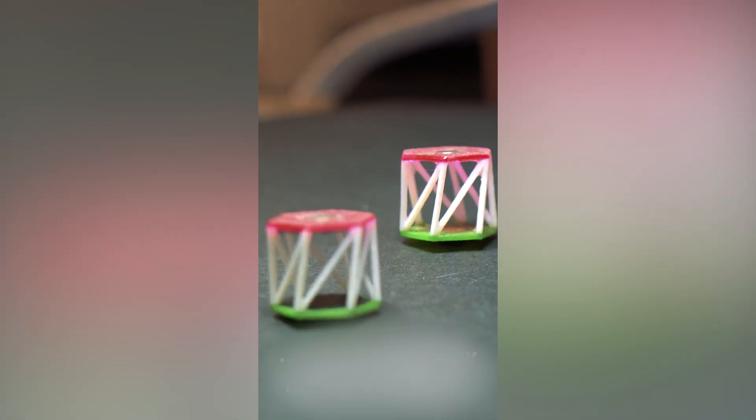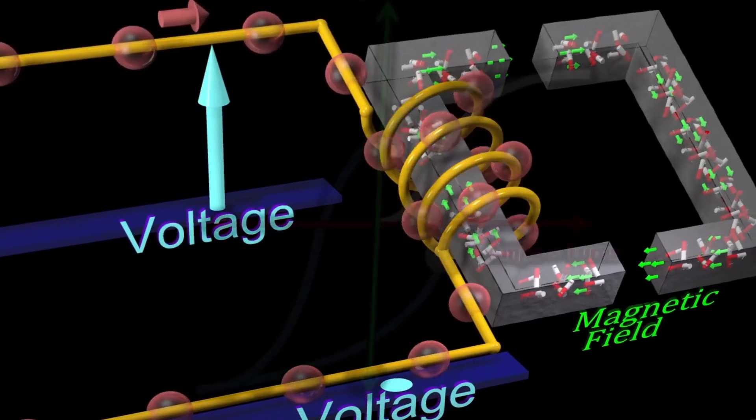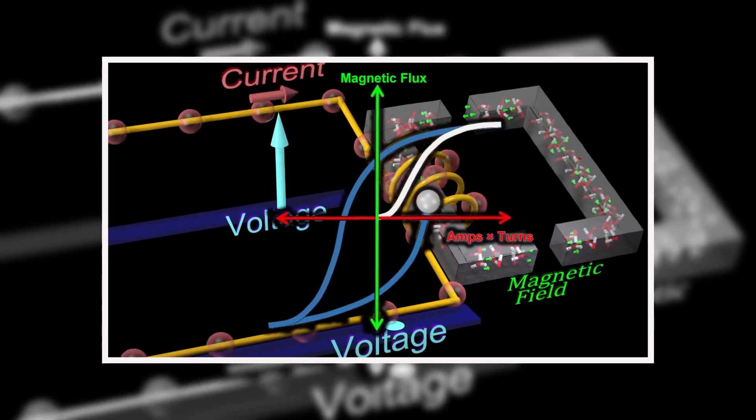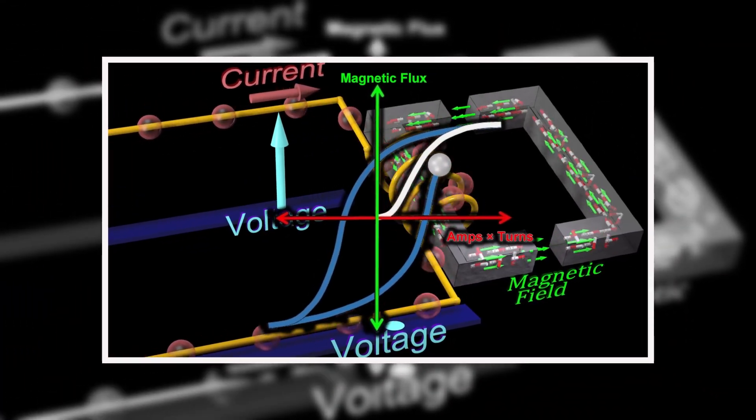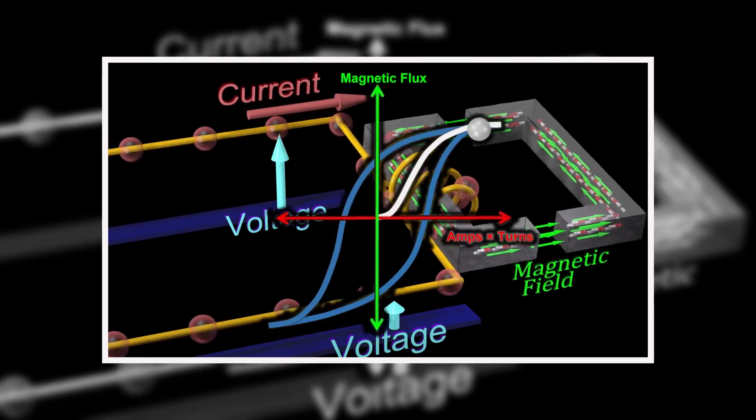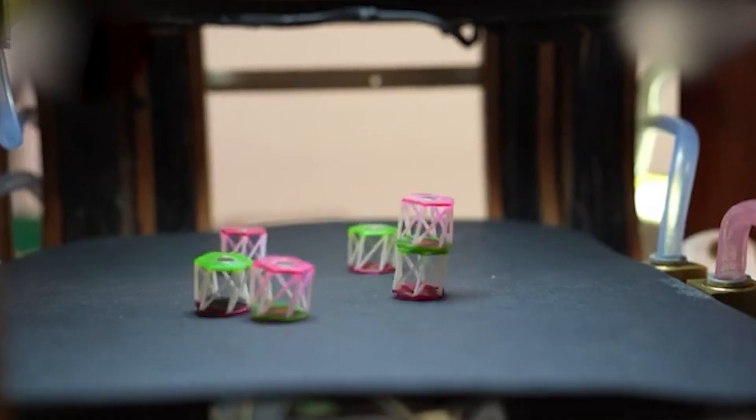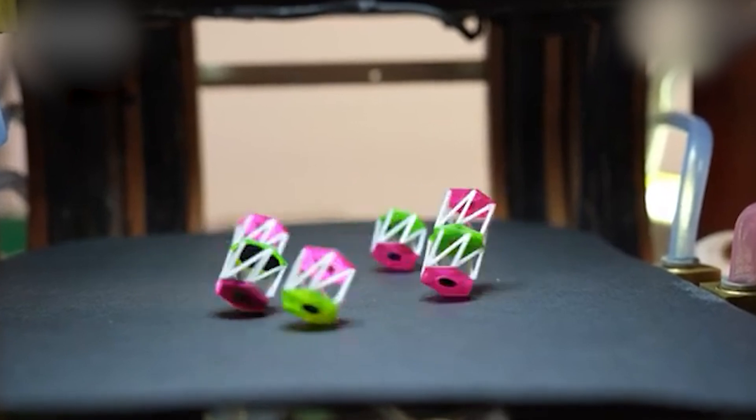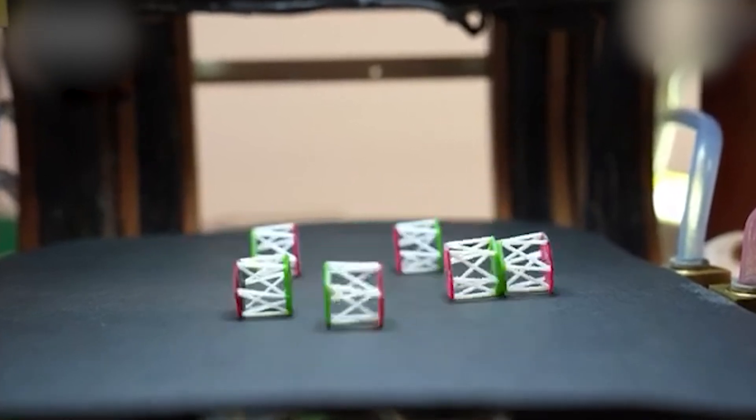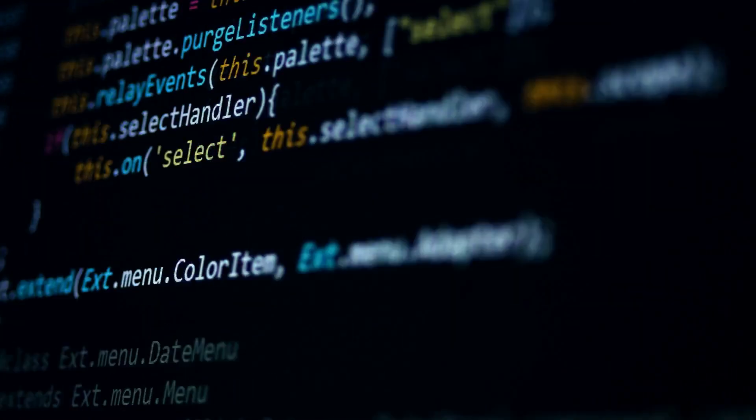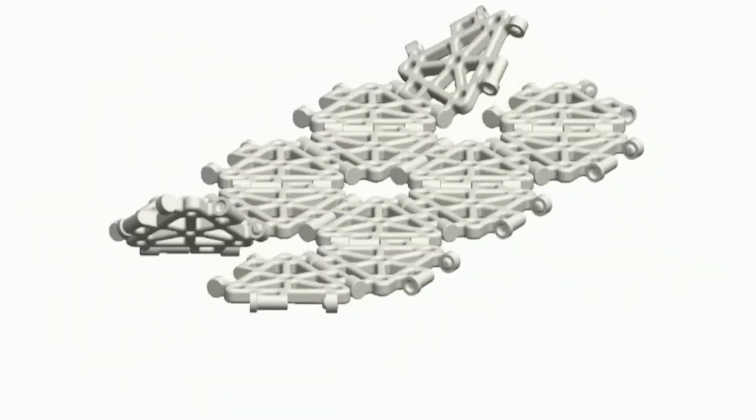Also note that the metabot has something called hysteresis. That's a term from physics that describes systems that remember what just happened and react differently depending on the sequence of inputs. If you make the metabot twist, then collapse, then twist again, it might not behave the same way the second time around. It's learning in a sense, but not with code, with movement memory built right into its mechanics.